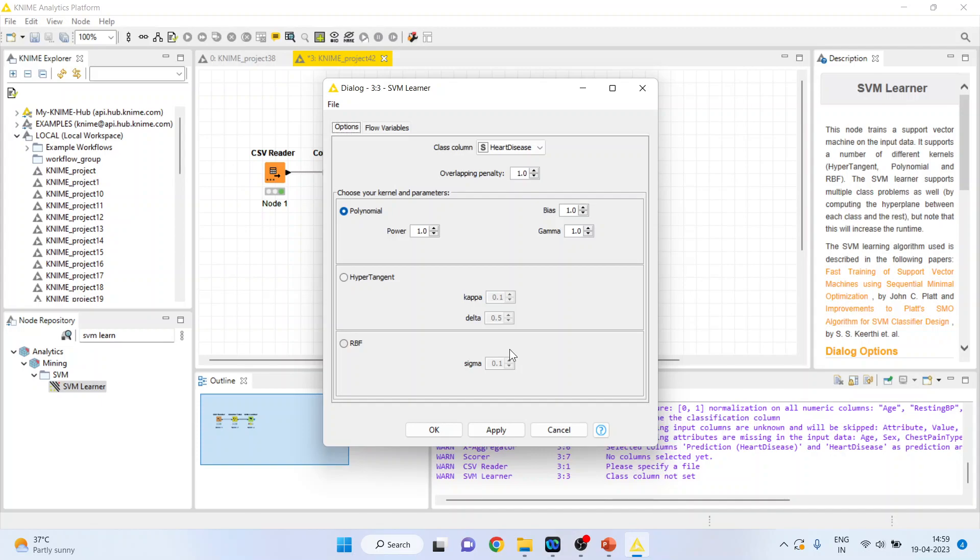Basically these kernels are used when the straight plane is not able to classify or is not able to segregate the two classes. So then we go for the high dimensional separation. So click ok.